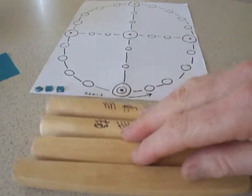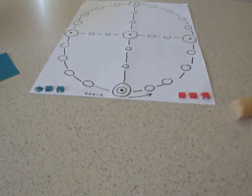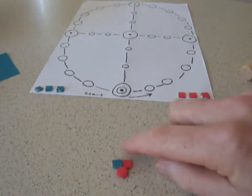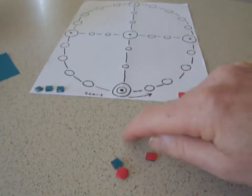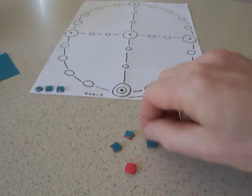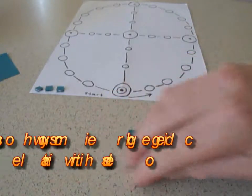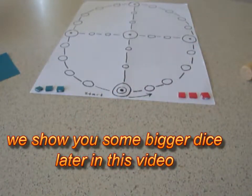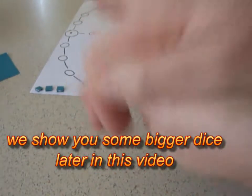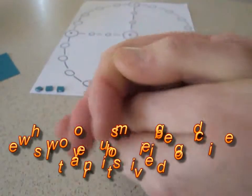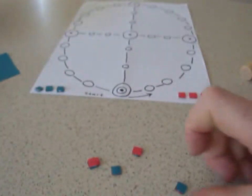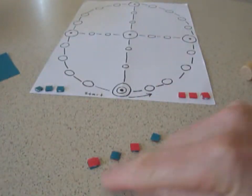What I've done is simply substituted sticks for some small counters. And we can see them here. They're blue on one side and red on the other. And if we roll them, or shake them, as I'm doing here in my hand, and then drop, we get a result. In this case, two red and two blue.